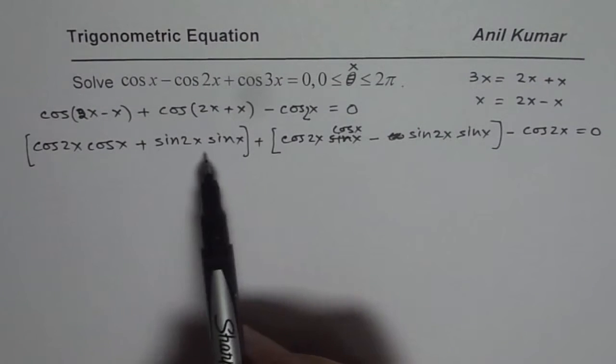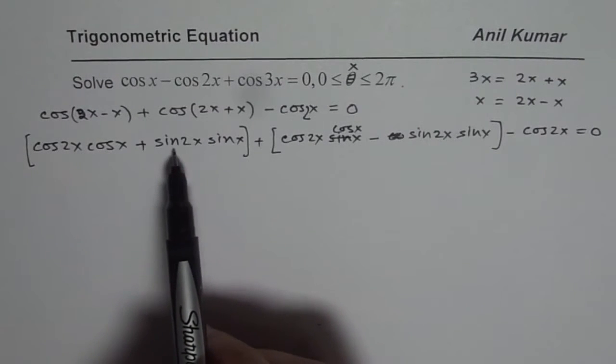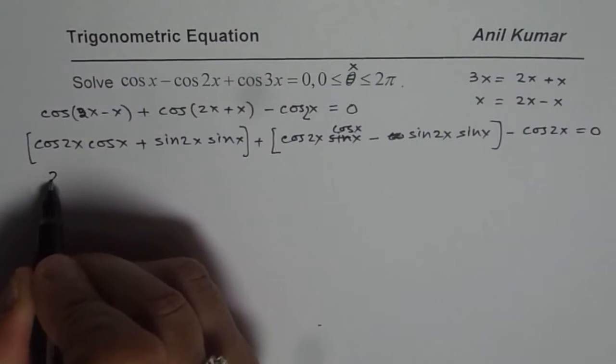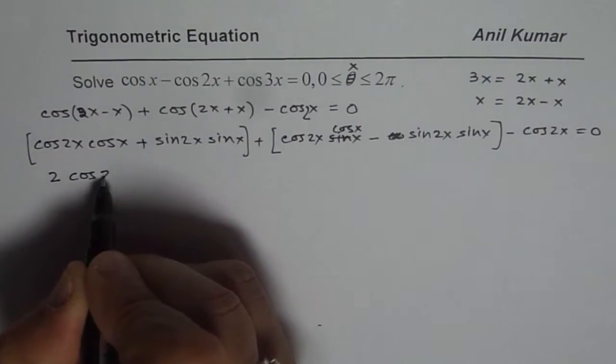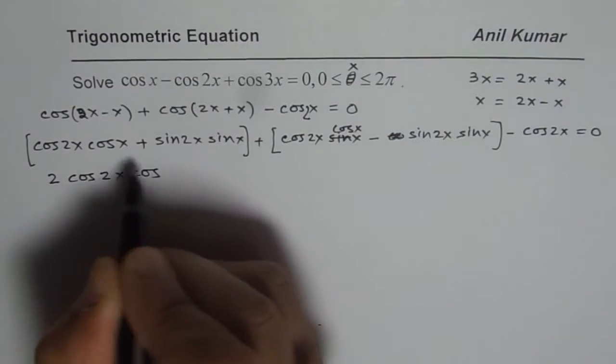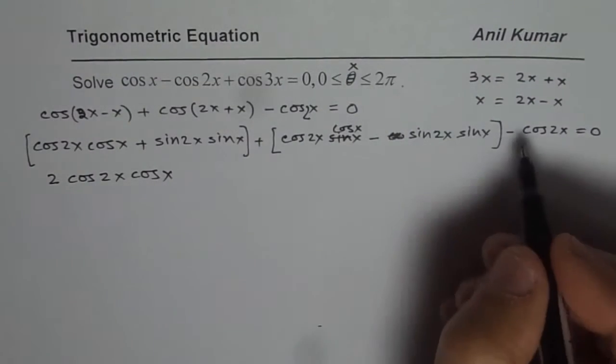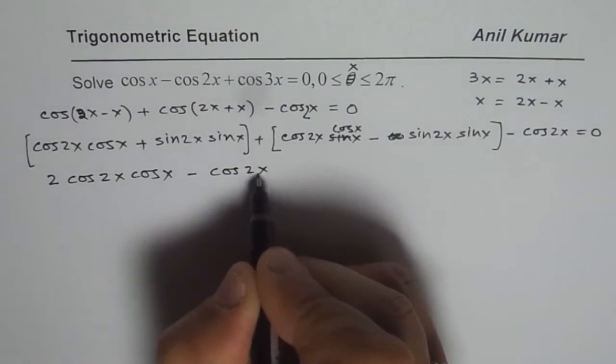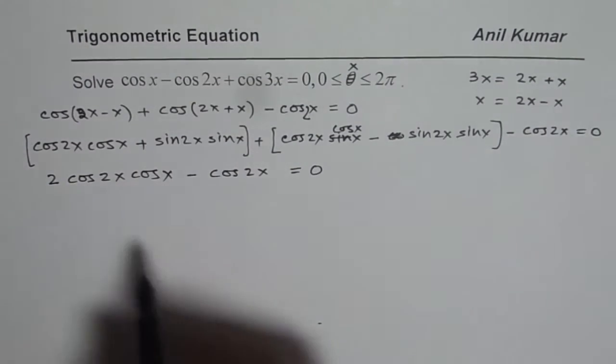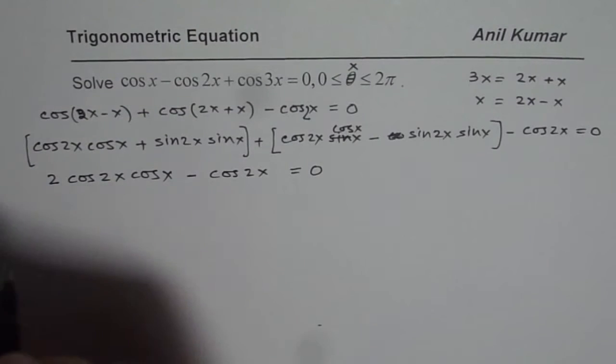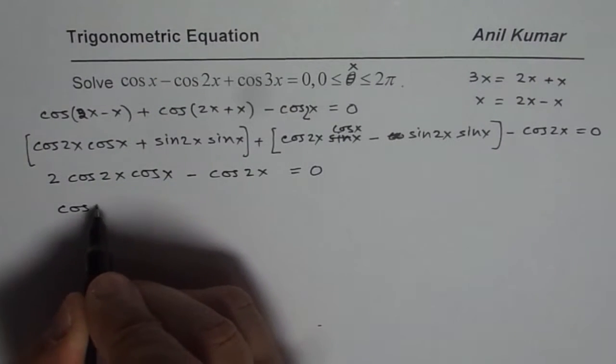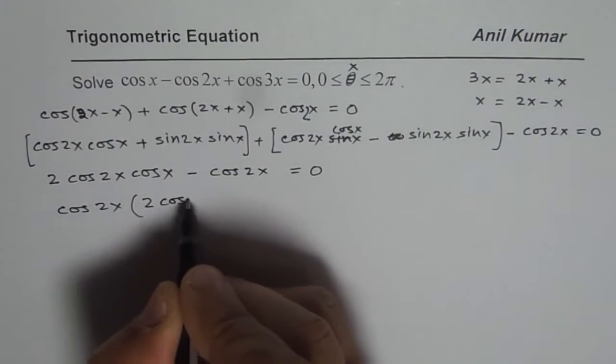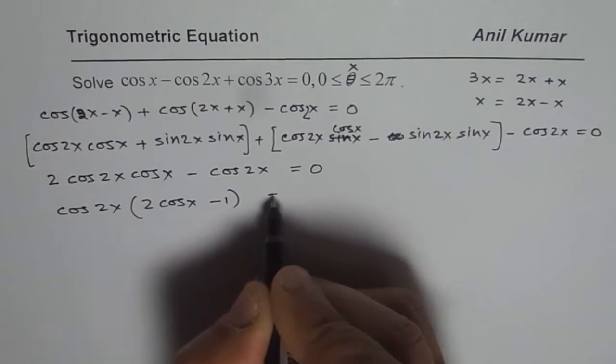When you combine these two terms, plus sin 2x sin x gets cancelled off. So we get 2 times cos 2x cos x. 2 times cos 2x cos x. And here we have minus cos 2x equals 0. Now we can factor cos 2x. We can write this as cos 2x times (2 cos x minus 1) equals 0.